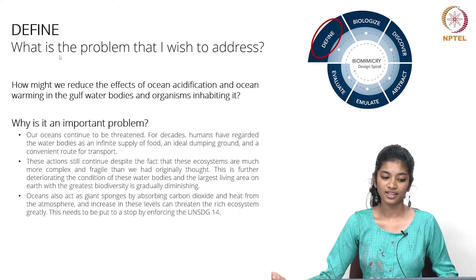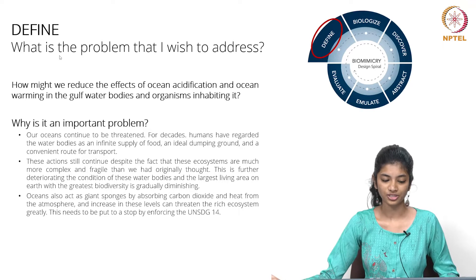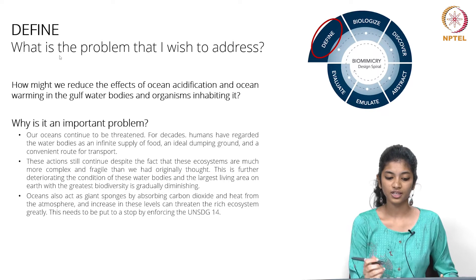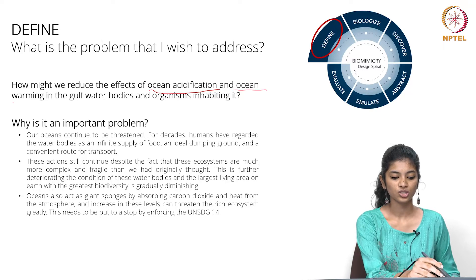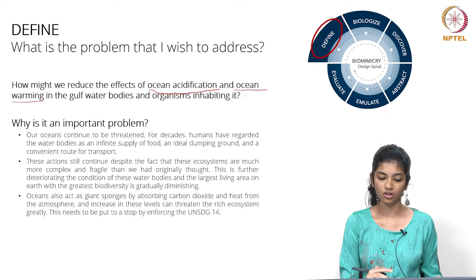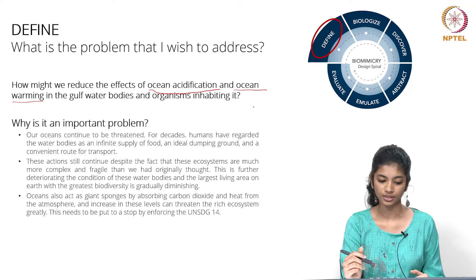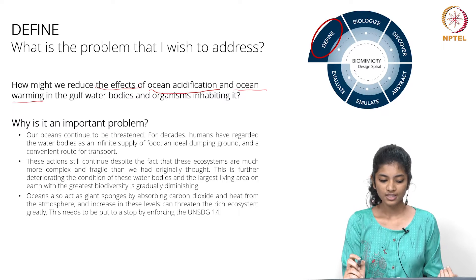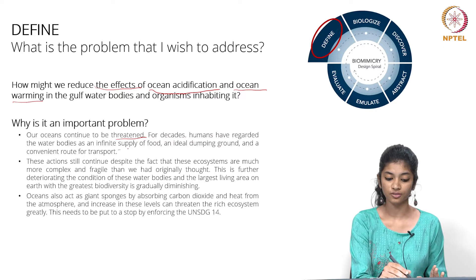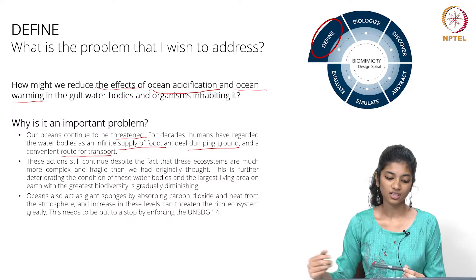The first step is define — what is the problem I wish to address? The first step of the whole biomimicry process is framing the right question. After a lot of research, I arrived at solving the problem of ocean acidification and ocean warming. Ocean acidification is caused by ocean bodies absorbing a lot of carbon dioxide, increasing its concentration and making water more acidic. Ocean warming is caused by water bodies absorbing a lot of heat. Our oceans continue to be threatened; we have only regarded water bodies as an infinite food supply, a dumping ground, and a transport route.